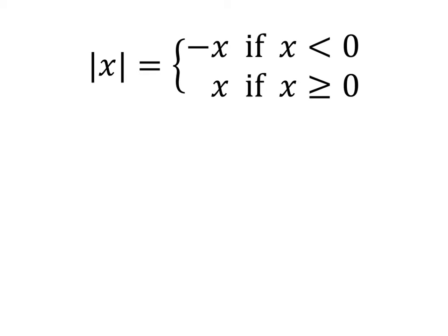So let's just do a few quick examples here. The absolute value of 5 is just 5. 5 is greater than or equal to 0, so the absolute values don't do anything.